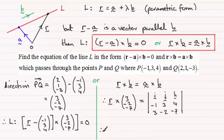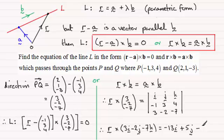And if we do this we end up with, and I'm going to just write this in slightly different form. Instead of column vectors here, I'm just going to write this as R crossed with 3I minus 2J minus 7K. And then this is going to be equal to, and if you work out this determinant in the usual way, that's going to be minus 13I plus 5J and then minus 7K.